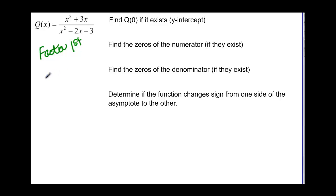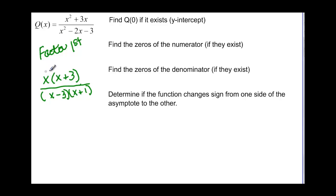Nice things happen if you factor first. On the top we would have x times (x + 3), and on the bottom we'd have (x − 3)(x + 1), giving us a minus 2 in the denominator. If we let x be zero, zero times (0 + 3) gives zero on top, and zero divided by anything is zero. So we have a y-intercept at (0, 0).